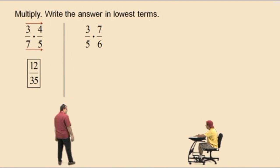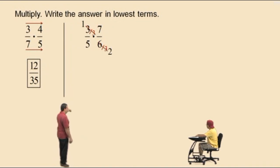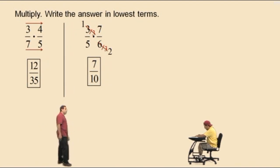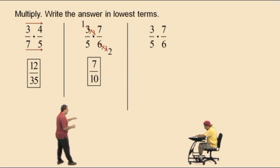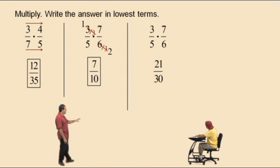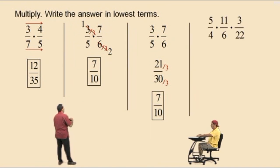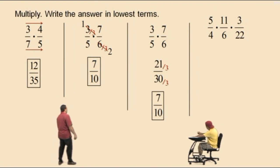Here we go, Charlie. A common factor of 3 and 6 is 3. 3 divided by 3 is 1, and 6 divided by 3 is 2. Multiply across the top: 1 times 7 is 7. And 5 times 2 is 10. Your answer is 7 tenths. Suppose you did not reduce before multiplying — that's fine. 3 times 7 is 21, and 5 times 6 is 30. Common factor of 21 and 30 is 3. 21 divided by 3 is 7, 30 divided by 3 is 10. Same answer: 7 tenths.